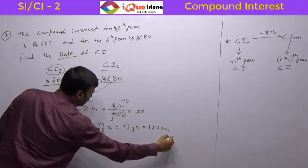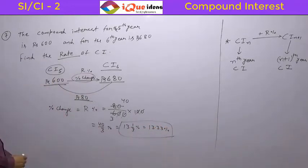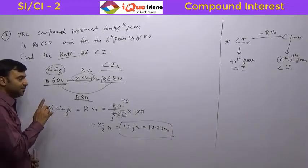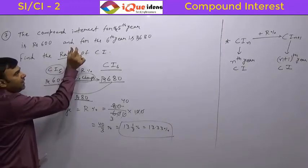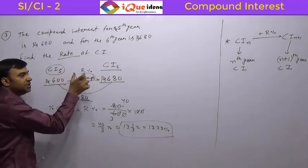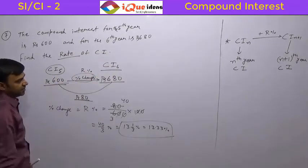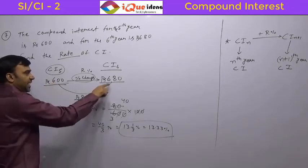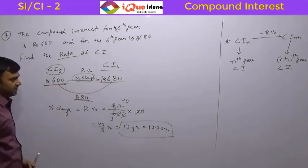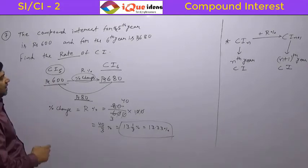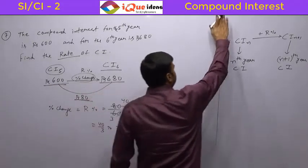Look at the options — whichever is there, mark it. This is a beautiful direct application. If the compound interest values for consecutive individual years are given, you can directly find the percentage change from one year's interest to the next year's interest, and that percentage change will be the rate percentage.